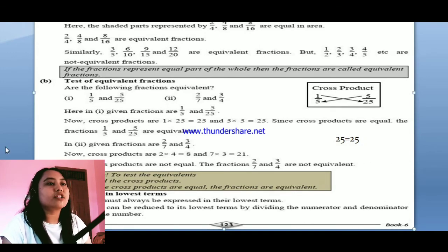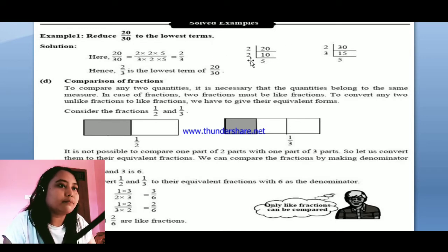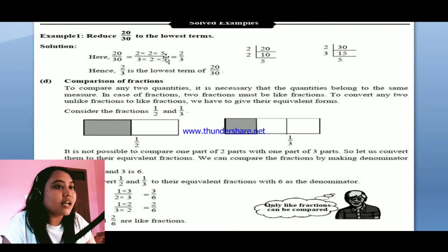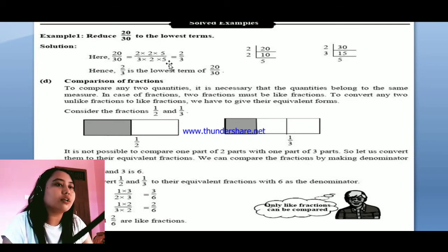Now you can see here — reduce 20/30 to the lowest terms. How to reduce 20/30 into the lowest term? We are using the factorization method. So 20 = 2 × 2 × 5, and 30 = 2 × 3 × 5. We converted 20 and 30 into their multiples. Then we need to cancel the like terms — the 5 and 5 appear in both numerator and denominator, so we cut them. The 2 and 2 also cancel. The remaining is 2/3, so the answer will be 2/3.